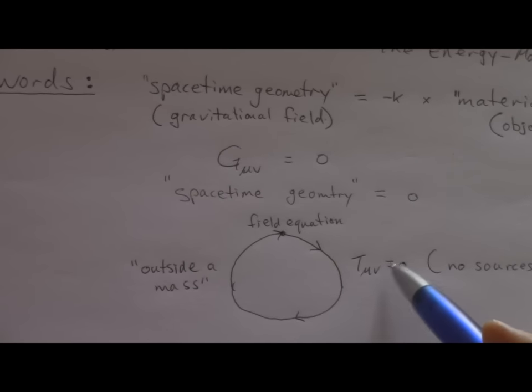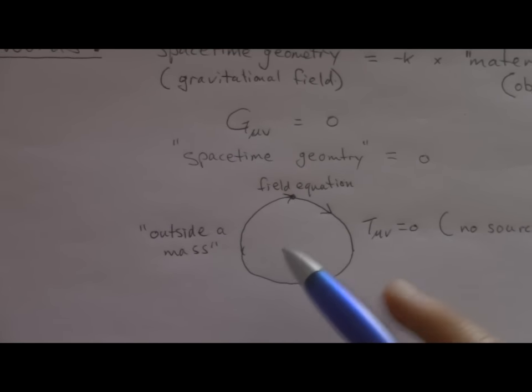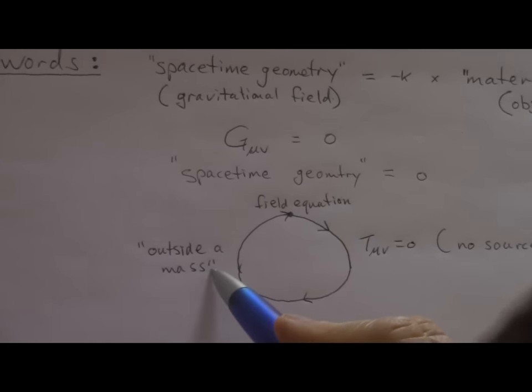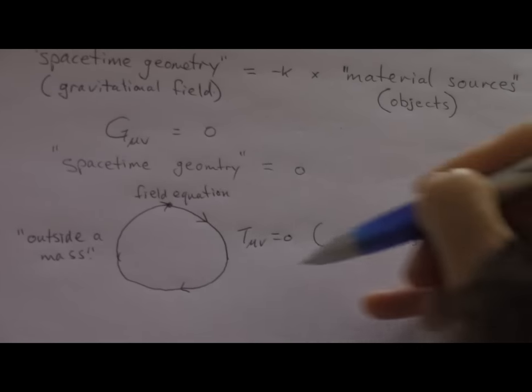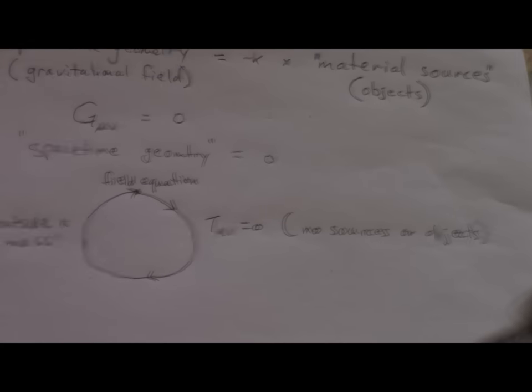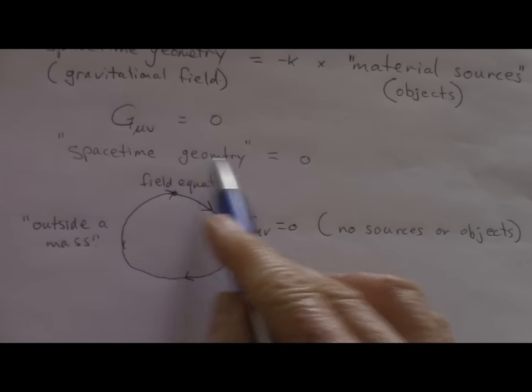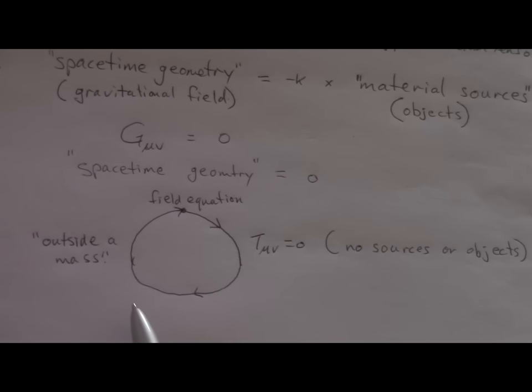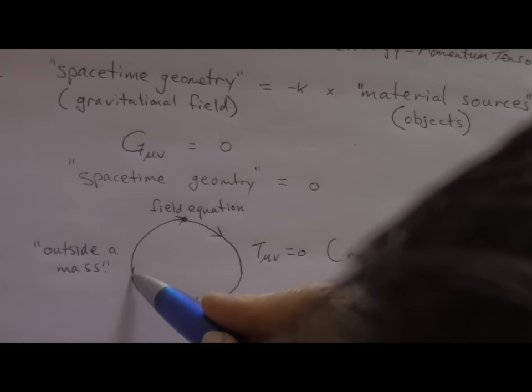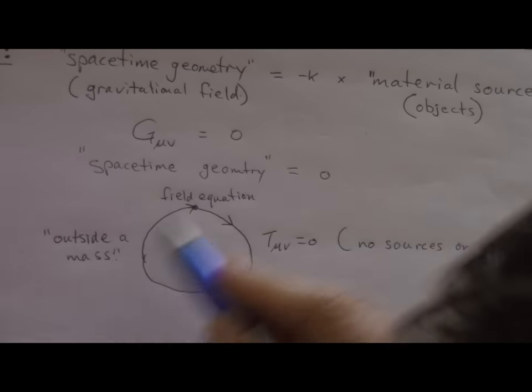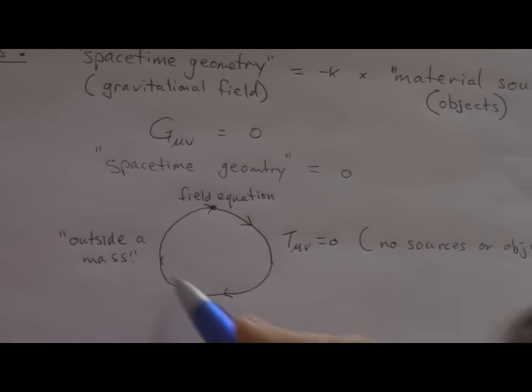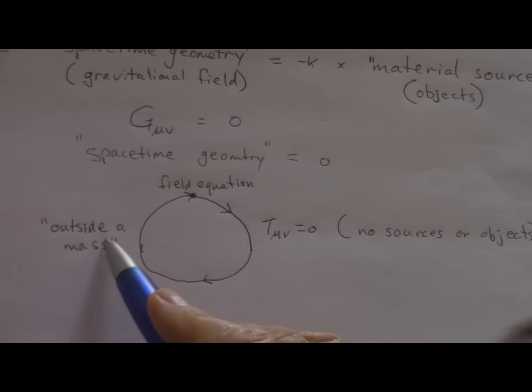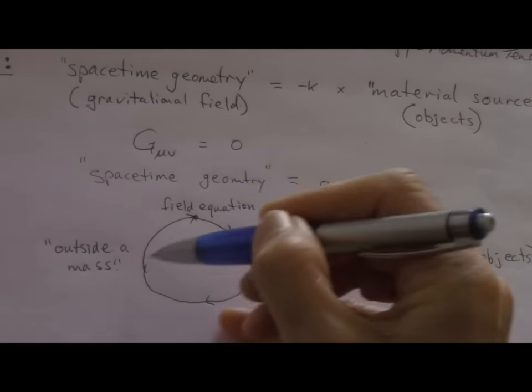But we're still told that, nonetheless, there is an object present. And how? With the words outside a mass or outside a body. So, all material sources are removed from the equations. There's nothing there to cause the gravitational field. Because we only have space-time geometry in this expression, equal to zero. But then, with the next breath, it said, this describes the gravitational field outside a mass. So the mass is reinstated immediately after being removed. It's reinstated with the words outside a mass. So the argument now is circular. And therefore, it's an invalid argument.